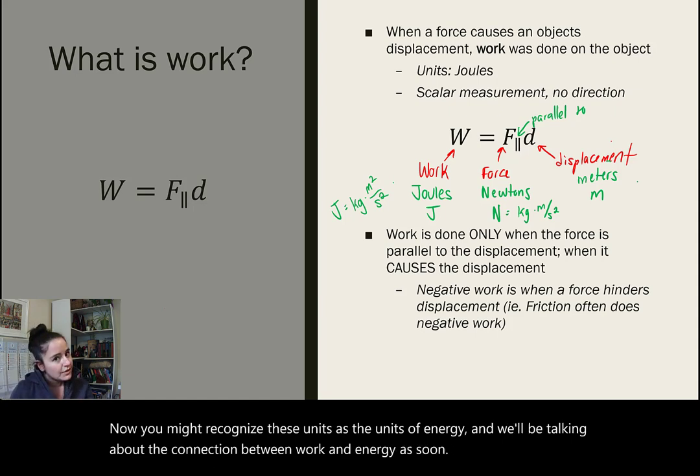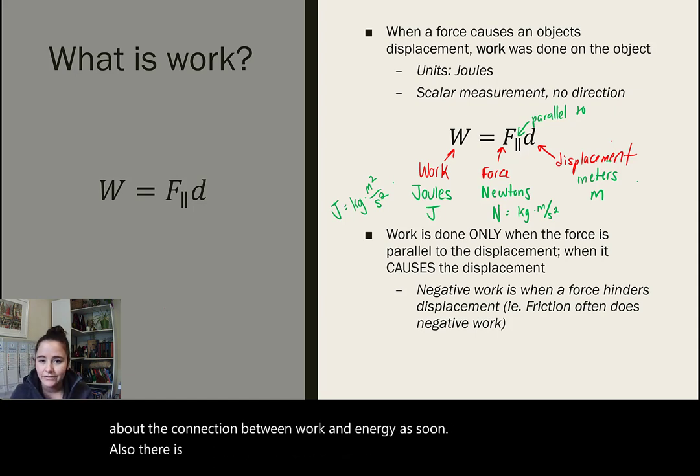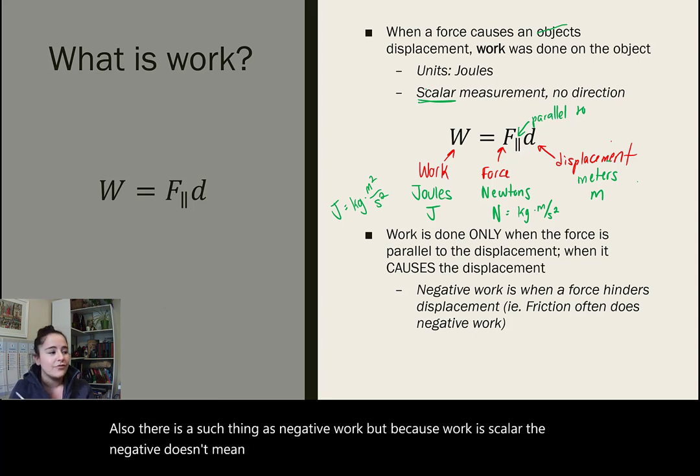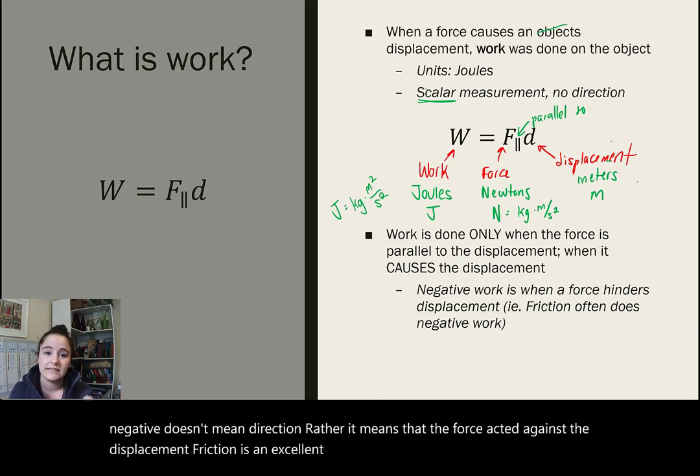Also, there is such a thing as negative work, but because work is scalar, the negative doesn't mean direction. Rather, it means that the force acted against the displacement. Friction is an excellent example of something that often does negative work.